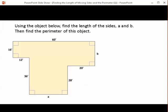Using the object below, we want to find the lengths of sides A and B and then we're going to find the perimeter of this object. So if you look for A and B, A is the length of the bottom piece of this object and then B is the right hand side, is the length of the right hand side.